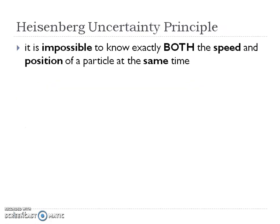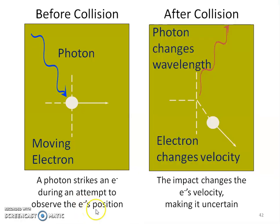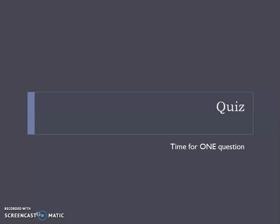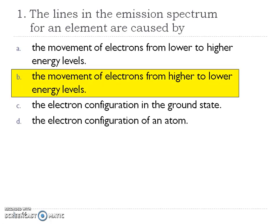The last thing to talk about is the Heisenberg uncertainty principle. It tells us that it is impossible to know both how fast an electron is going and where its position is. A photon of light strikes the electron as it attempts to figure out where that electron's position is. The problem is the impact actually changes the electron's velocity — it gives it a push. So now we have no idea where that electron is. It is truly impossible to know both simultaneously.